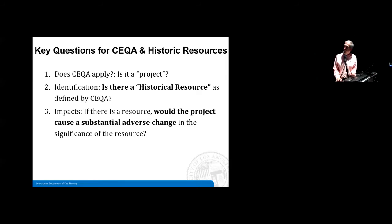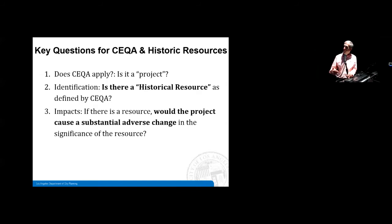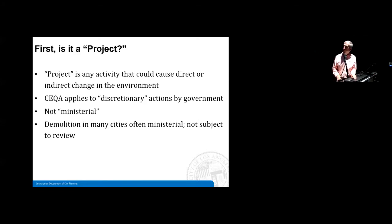Now looking at how CEQA applies specifically to historic resources — it's really a three-part test. First question: does CEQA apply? Is it a project? We've talked about that. Assuming it applies, next question: is there a historical resource as CEQA defines it? And then, impact: would the project cause a substantial adverse change in the significance of the resource? The project is any activity that could cause a direct or indirect change in the environment — it applies to discretionary actions, not ministerial.